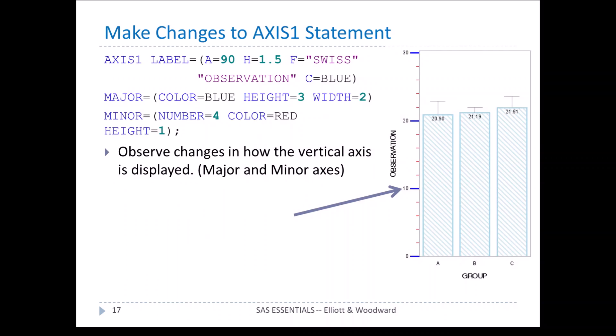Let's make a few changes. We're going to define some major and minor axes. In axis1, we have the familiar angle equal 90 option. New items include major equal, color equal blue, height equal 3, width equal 2 — that defines the major axis tick marks in blue on the output. Then we have minor axes, where we're going to have 4 minor tick marks between each major tick. So between 10 and 20, we get ticks at 12, 14, 16, 18 — that's 4 tick points between each major axis.